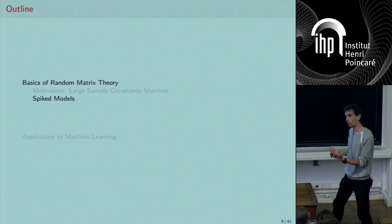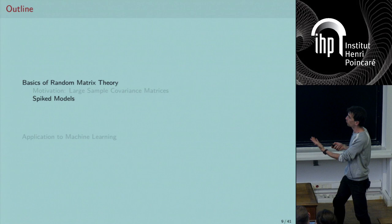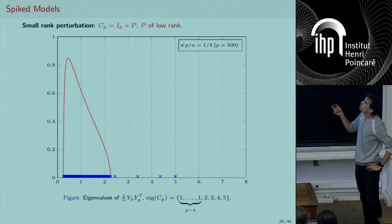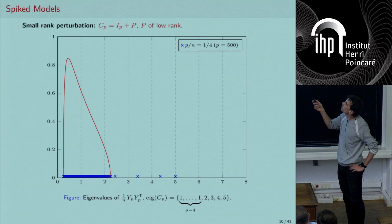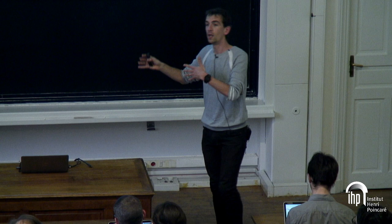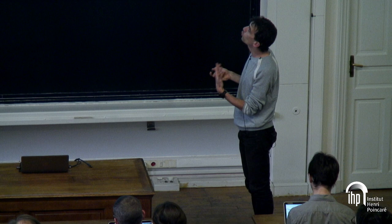Why do we care? Because we're trying to estimate the population covariance matrix. The eigenvalues are not well estimated — so what happens to the eigenvectors? Assume now there's structure in my covariance matrix: C_p equals the identity plus a low-rank matrix P. You want to do PCA and the information is inside P.